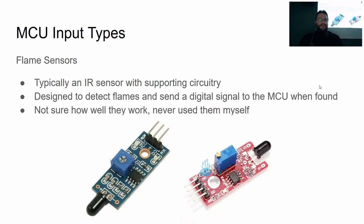There are flame sensors — apparently they are designed so you point IR somewhere and if it sees a flame, based on the specific IR frequencies and pattern, it will alert you only if something is on fire. I've never actually used these, but they seemed neat and they're for sale everywhere.